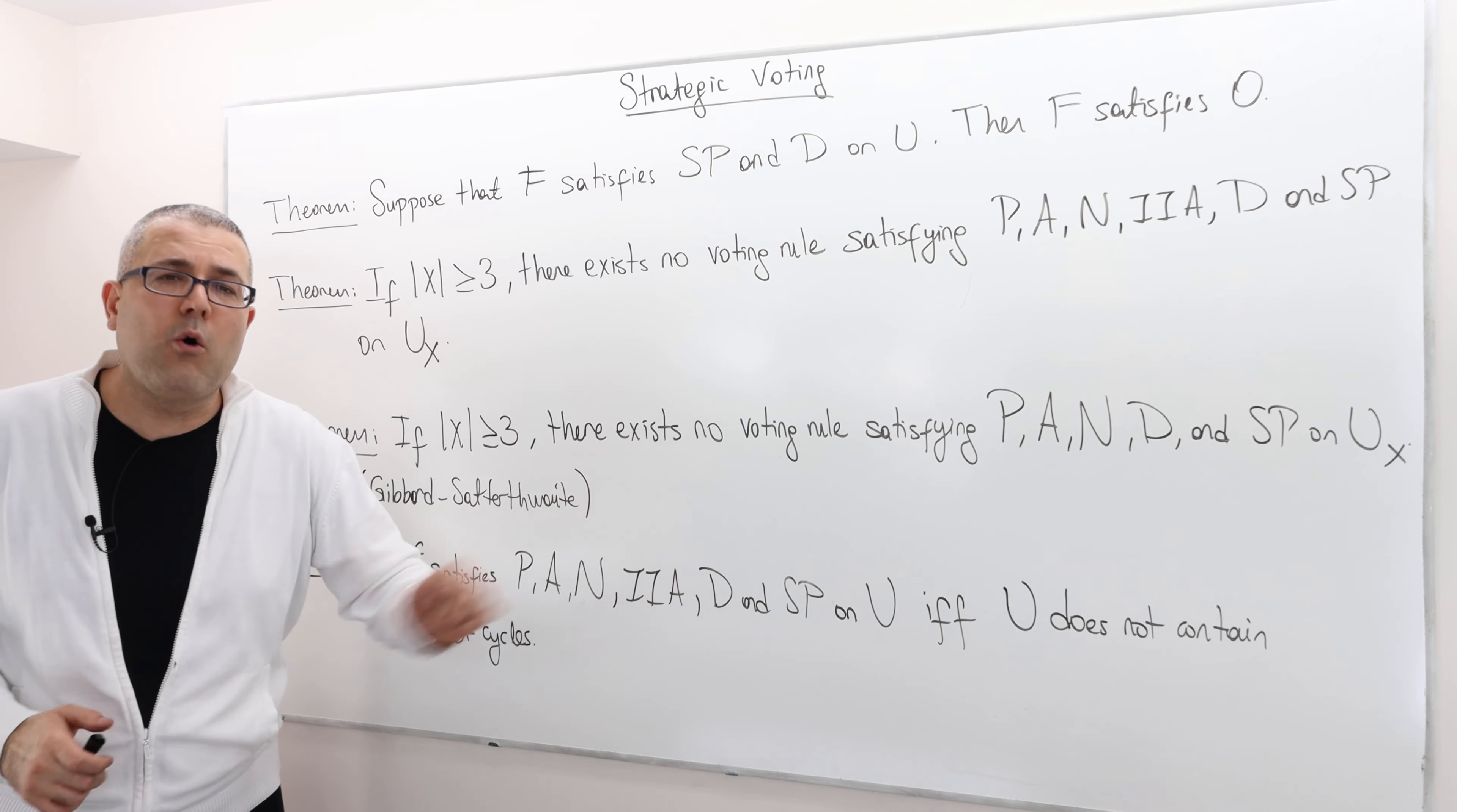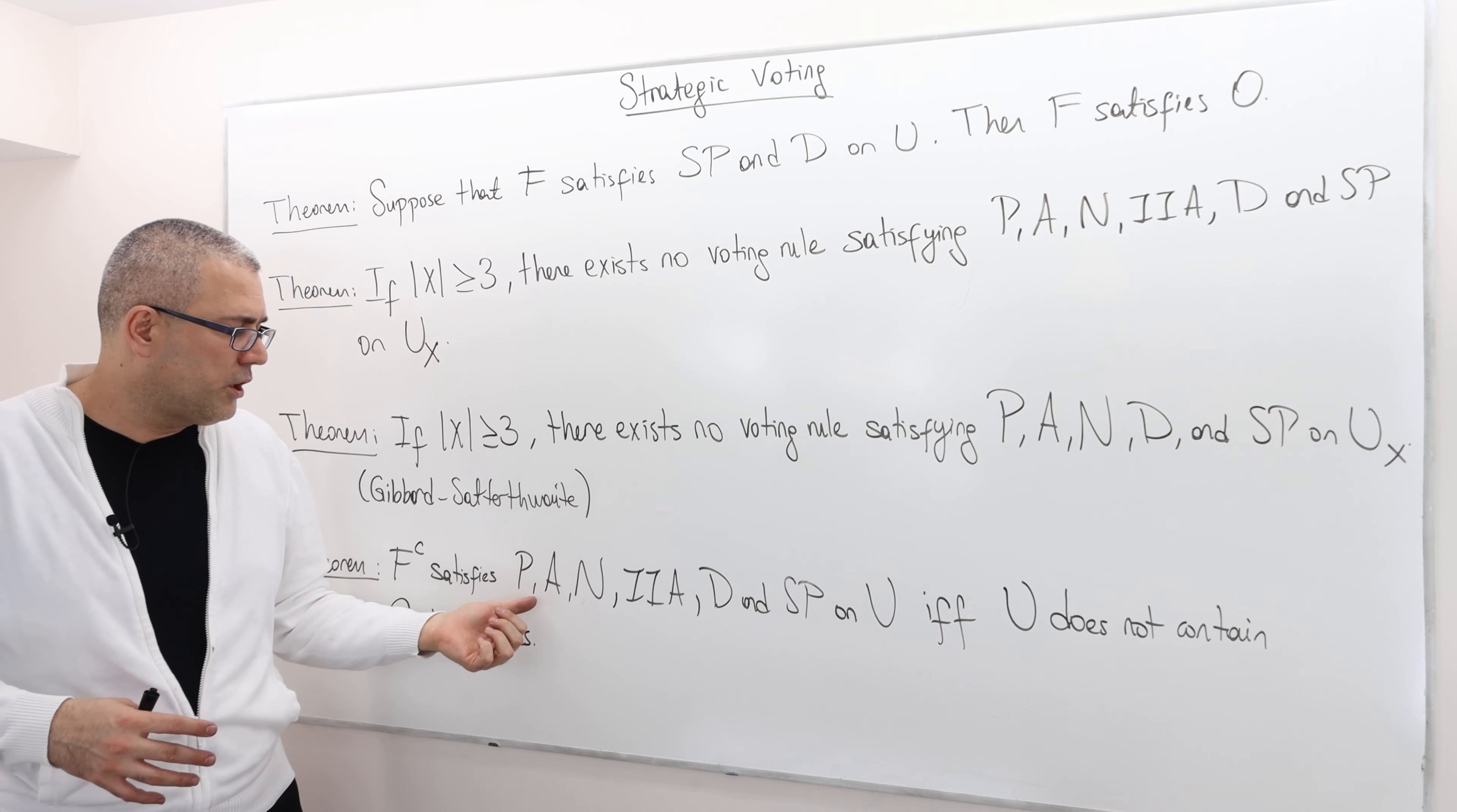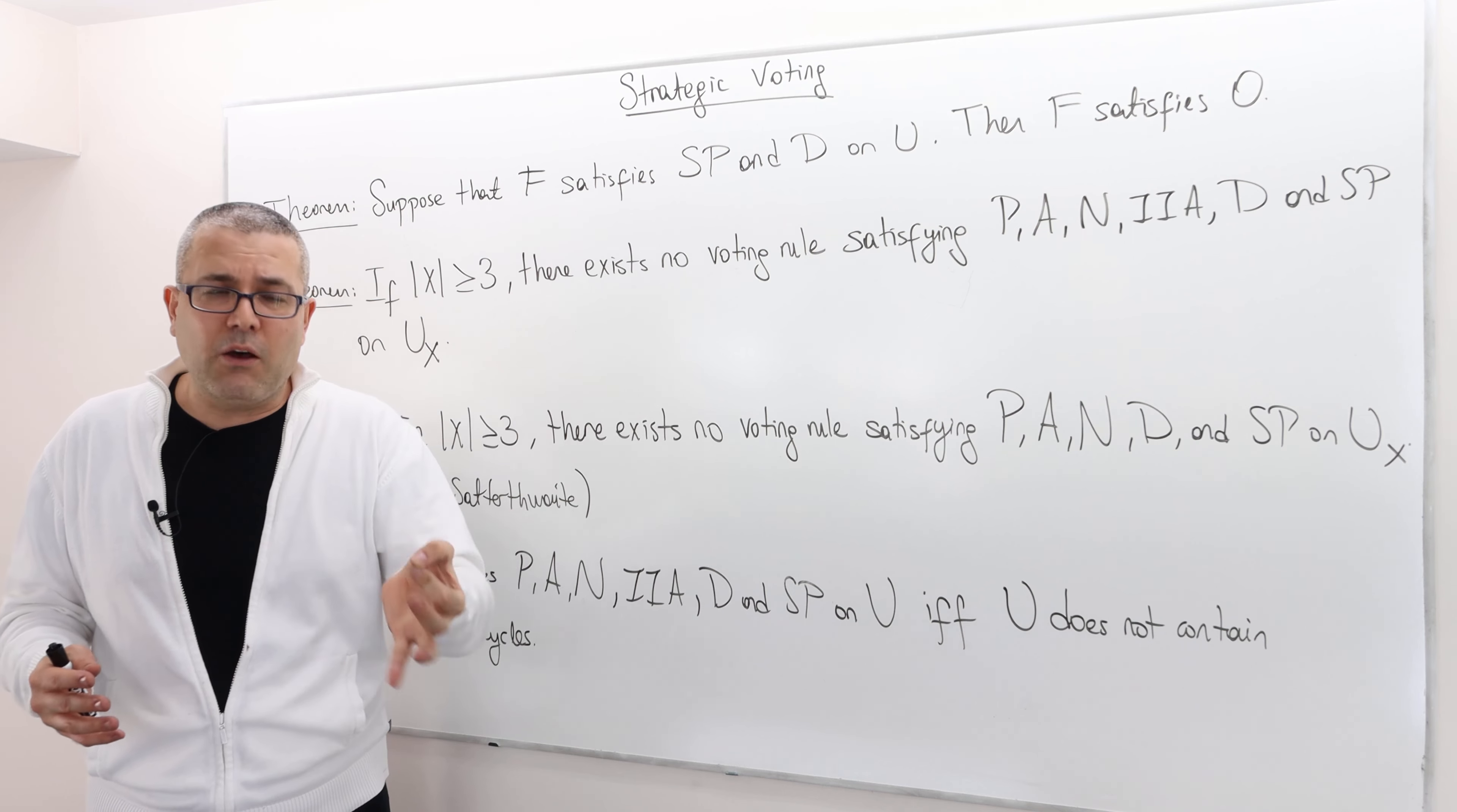Majority rule actually satisfies all those properties. Meaning it's a wonderful rule because everybody is going to vote truthfully. It's going to be pretty optimal in the sense that no inferior outcome will be chosen or candidate will be chosen. It's going to be anonymous, meaning no voter has more influence on the outcome and it's neutral. No candidate has influence on the outcome. IIA meaning vote splitting is not going to happen and it will always give us a unique outcome.